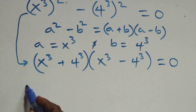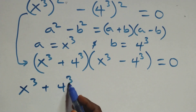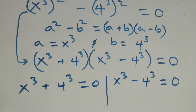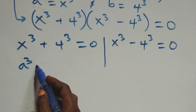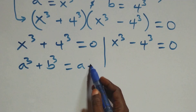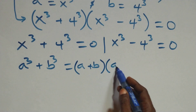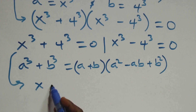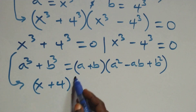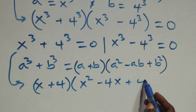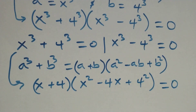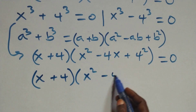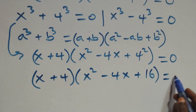We have two possible cases. The first one: x raised to power 3 plus 4 raised to power 3 equals 0. Using the sum of cubes formula, a cubed plus b cubed equals a plus b times a squared minus ab plus b squared, this becomes x plus 4 times x squared minus 4x plus 16 equals 0.